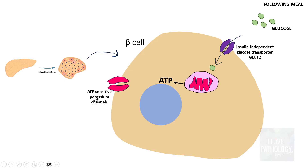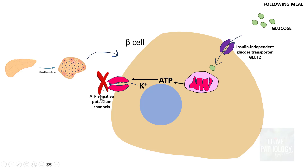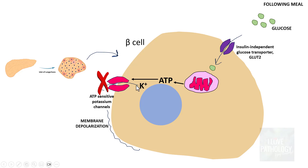In the same beta cell, you have another channel: the ATP-sensitive potassium channel. Normally, potassium goes outside the cell. Because this is an ATP-sensitive potassium channel, increased levels of ATP result in blockage of these potassium channels. Thereby, potassium does not go out and stays inside the cytoplasm. This results in a depolarized state of the plasma membrane — normally potassium going out causes hyperpolarization, but since it stays inside, it results in membrane depolarization.